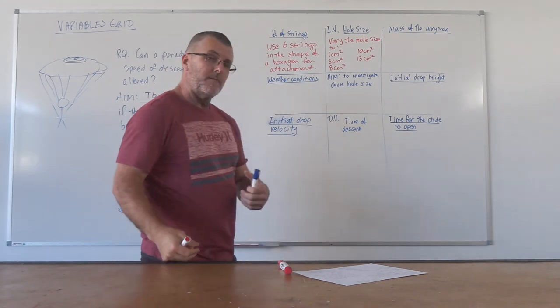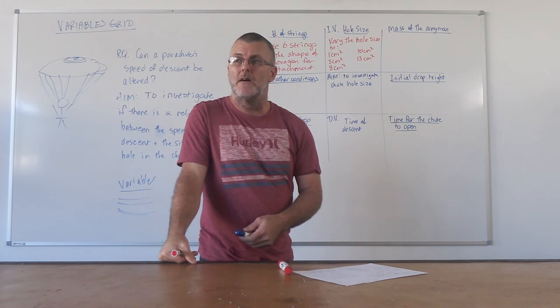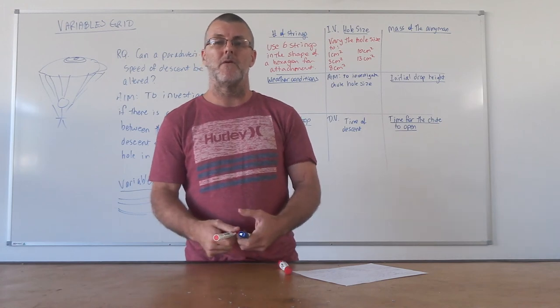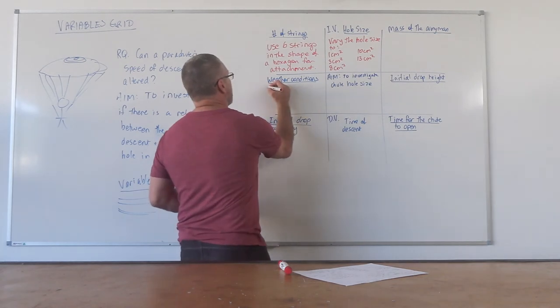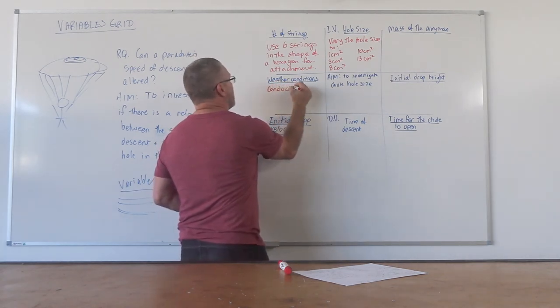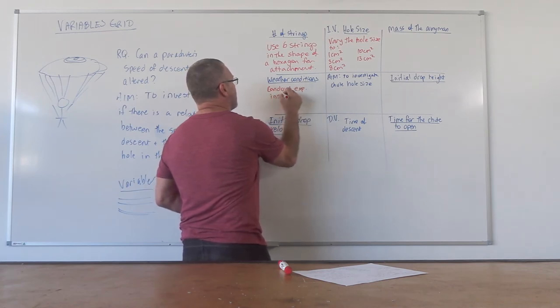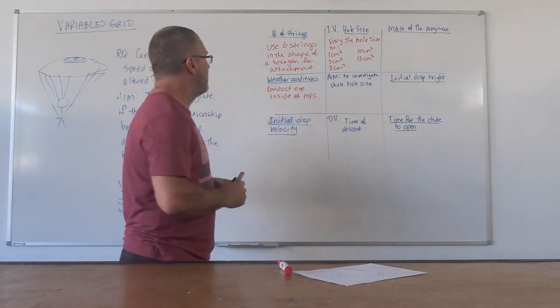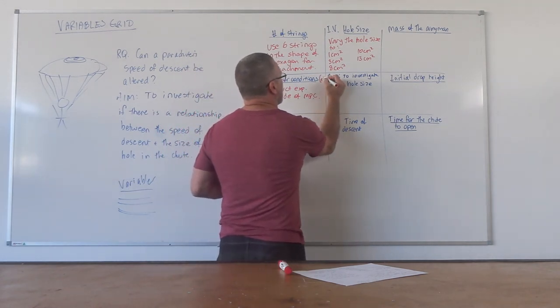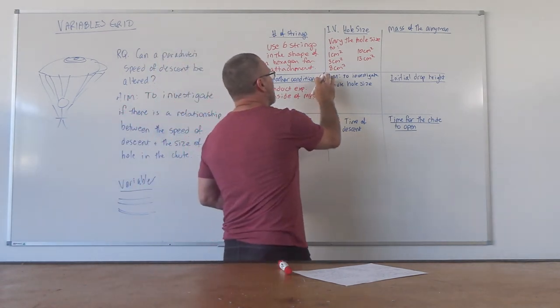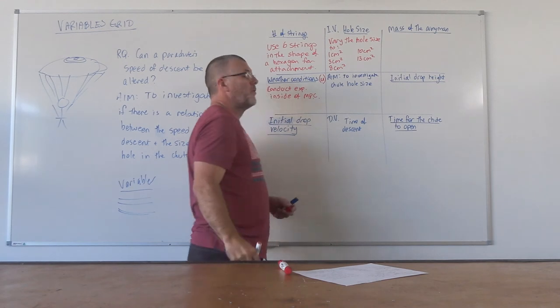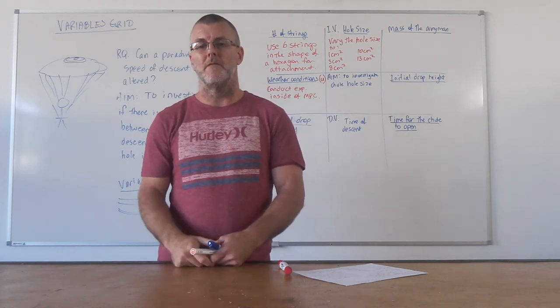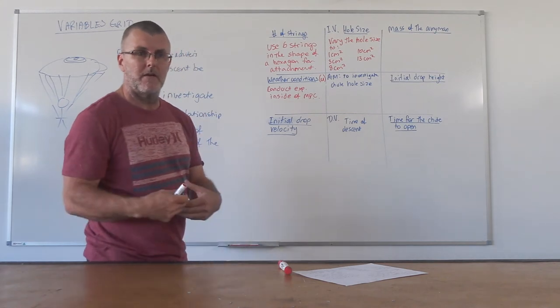Weather conditions, we're going to make sure that we do it inside. So we might go to the tallest place in our school, inside of our multipurpose center, and we're going to drop it inside so that we have no effect of those weather conditions like wind or rain. So weather conditions, we're going to conduct the experiment inside of MPC, multipurpose center. If you can't control that, then what I often do at the end is I'll go and put things like this - E for error, or if it's not an error, we might put U for uncontrolled. And they're the things that later on when we come into our discussion, we look at those and we say, suggested improvements might be, we look at anything that's got a U or an E beside it, and they're the things we need to modify.